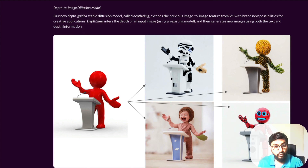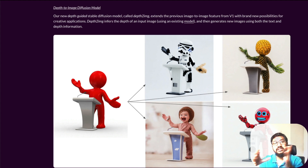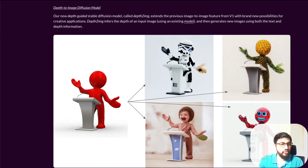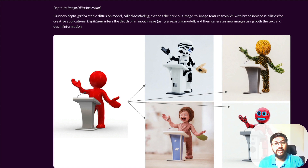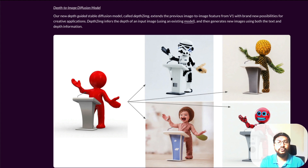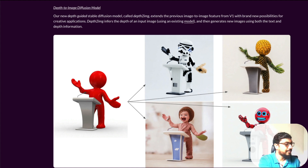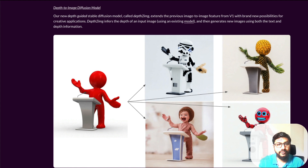The most exciting model for me is the new depth-to-image diffusion model. It takes image-to-image to the next level. Previously in image-to-image, you give an input image and a prompt, and the model tries to hold the properties of the input image together with the prompt text to create a new image. But a problem arises when you need to respect the rules of physics — for example, replacing a sofa in a room interior. Standard image-to-image doesn't consider the dimensions or depth of the scene.